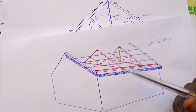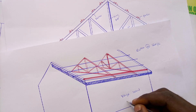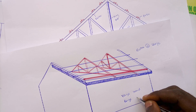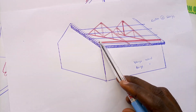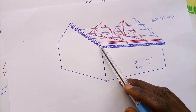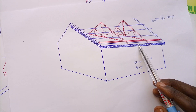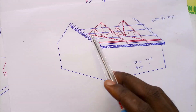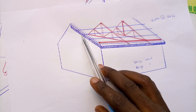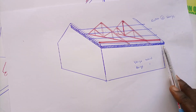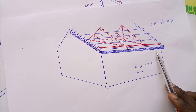We have the fascia board on this side, and a verge board — also called a barge board — on the triangular gable end side. Both names are correct: verge board or barge board. The material for the barge board is the same as for the fascia board, but to differentiate: the one at the triangular gable end is called the barge board, while the one along the length of the building is called the fascia board.